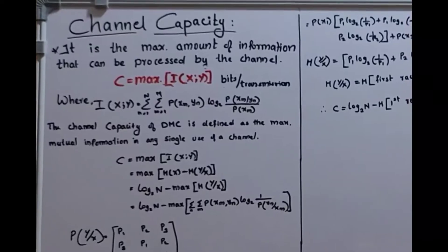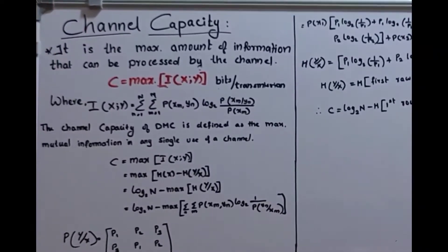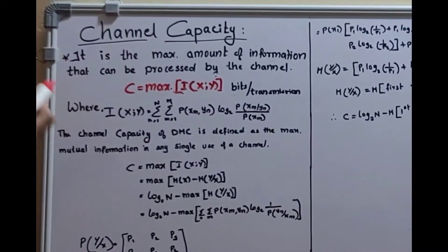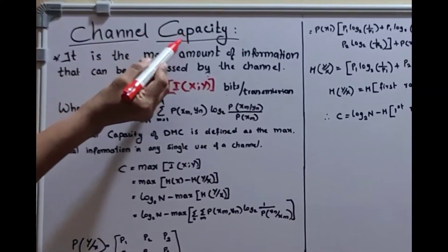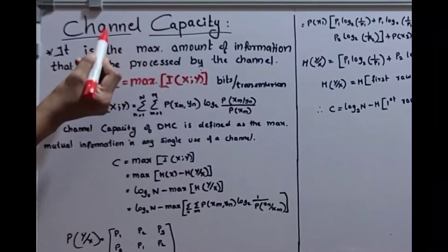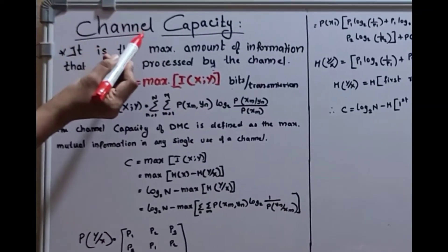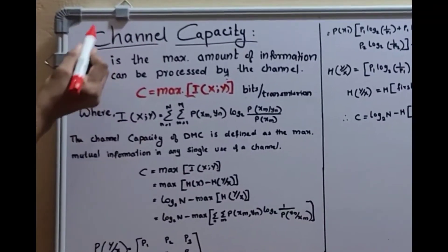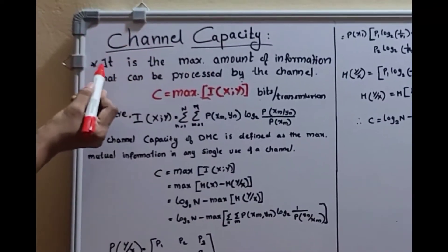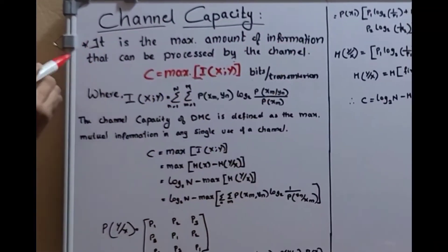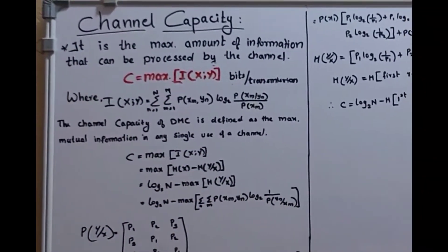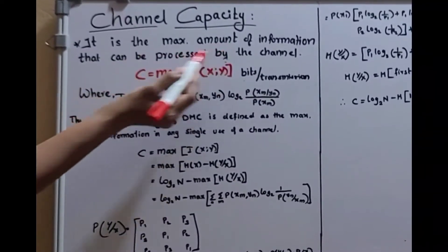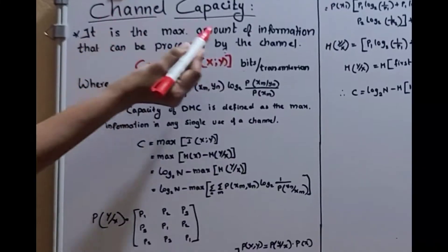Today's topic is channel capacity. From the name itself, it is clear that it measures the capacity of a channel. We know that information is passing through the channel, so the capacity of a channel means the capacity of information that a channel can carry. Channel capacity is the maximum amount of information that can be processed by the channel — that is, the maximum information a channel can carry.